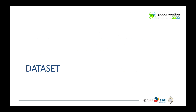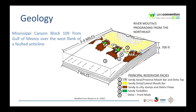Now I will explain a bit of the data set. The data set is located in Mississippi Canyon Block 109 from Gulf of Mexico, over the west flank of a Faulted Anticline. The faces of the reservoir expand from Sandy to Shale, as we can see in the sketch. Reservoirs are trapped in two sequences, upper and lower delta.